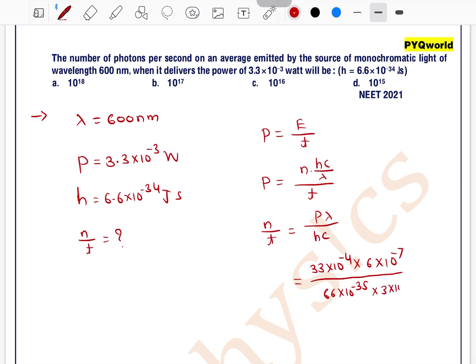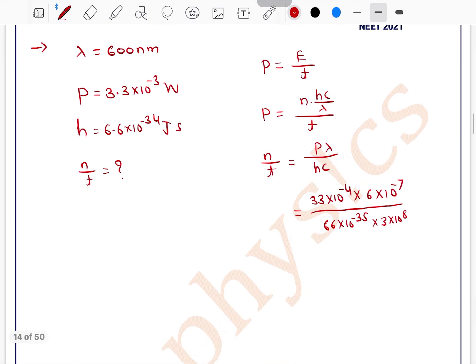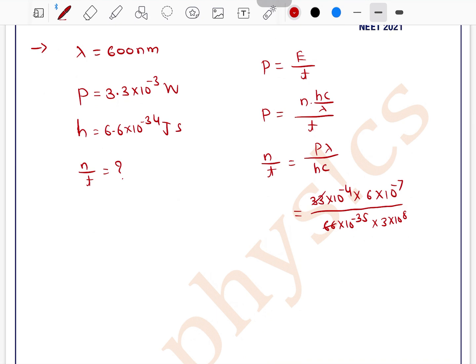So, 33 divided by 66, and 6 divided by 3, these cancel out. So, 10 to the power minus 4 minus 7 will be minus 11 and minus 35 plus 8 will be minus 27.